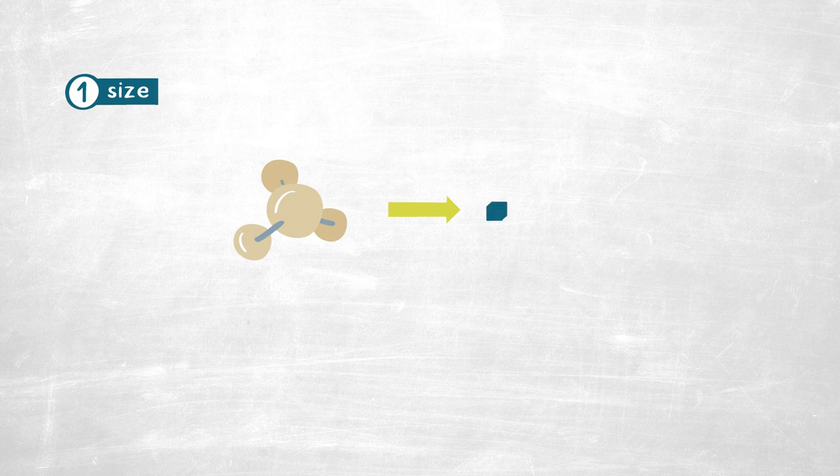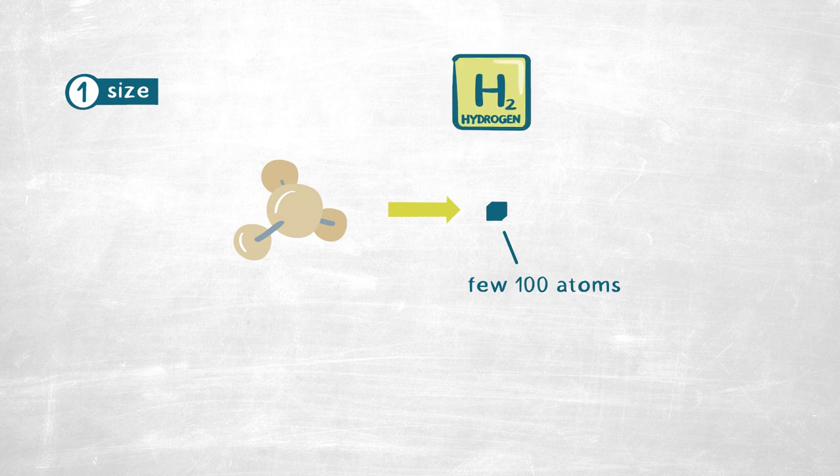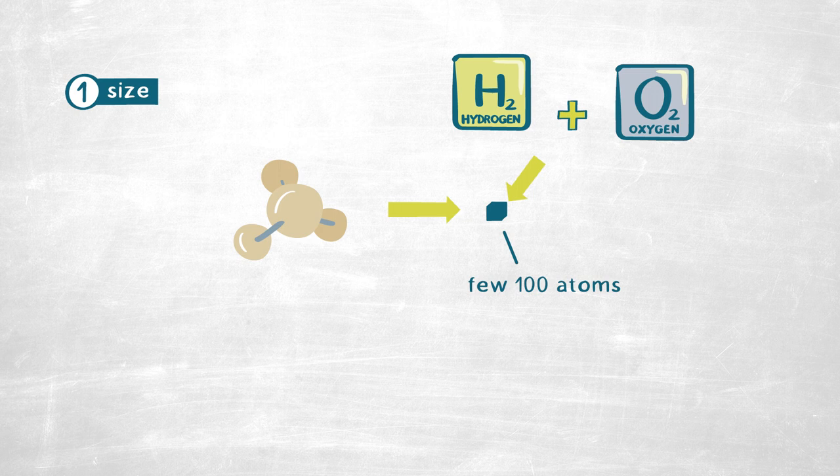In the first point, the point of size, this catalyst has to be really small, in the order of a few hundred atoms, because the reaction that occurs between the hydrogen and the oxygen occurs only on the surface of this catalyst.